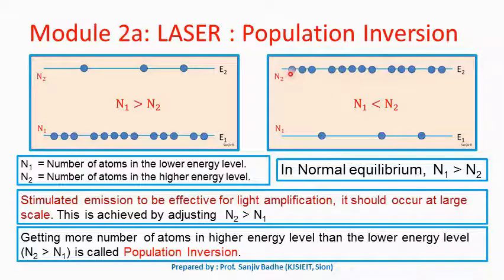This condition is achieved by maintaining more number of atoms in the excited state as compared to the number of atoms in lower energy state, so N2 greater than N1. This condition is called population inversion. Why population inversion? Because at equilibrium, in normal equilibrium, there are more number of atoms in the lower energy level.